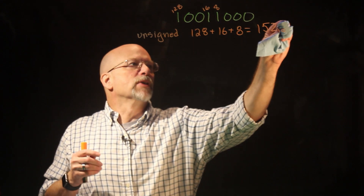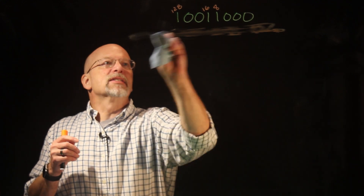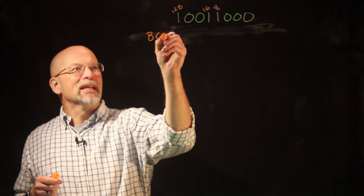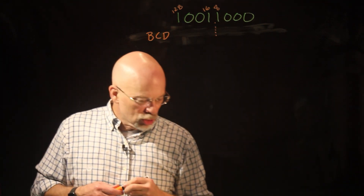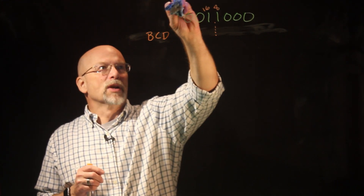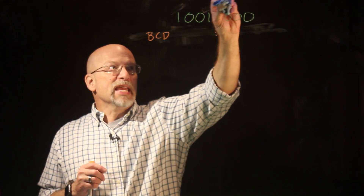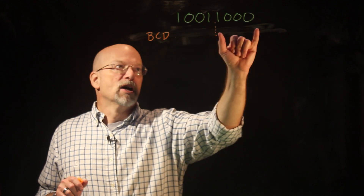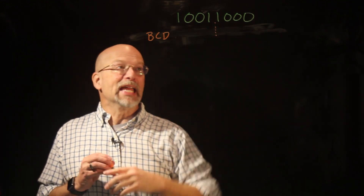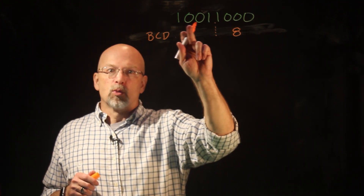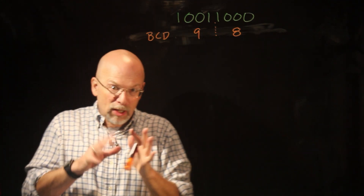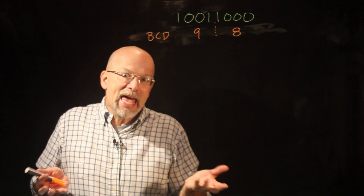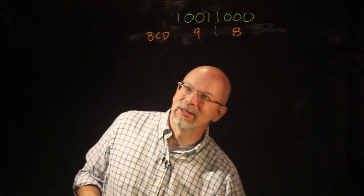What else could it represent? Maybe that wasn't the representation we meant. Maybe what we wanted was BCD. BCD says we divide this into two nibbles. Each nibble represents a different decimal digit — the ones place and the tens place. The ones place has 1000, which is 8. The tens place has 1001, which is 9. So in BCD, we are looking at 98. Very different number.